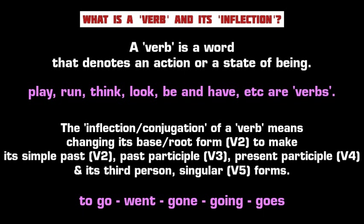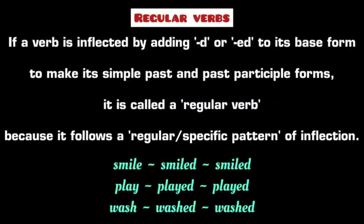For example, the inflections of the verb 'to go' are: went in simple past tense, gone as past participle, going as present participle, and goes in third person singular form. In this way we see that verbs inflect or change their base form in different ways for different grammatical purposes. According to their patterns of inflection, verbs are classified as regular and irregular verbs.